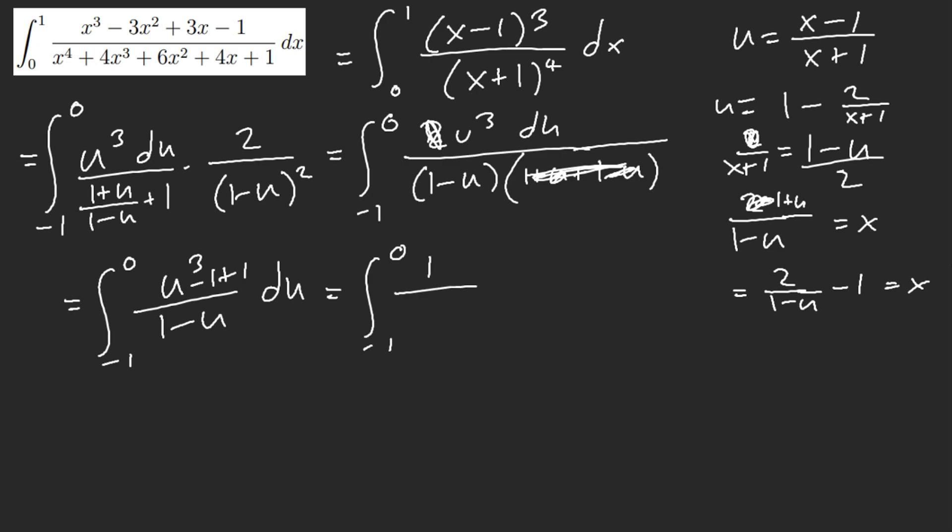I get 1 over 1 minus u, and then minus... Yeah, it's not as great. It's not as great, y'all. It's not as great. You can let u equal negative x if you want to get rid of that negative 1. That's what I would do, for lazy reasons.